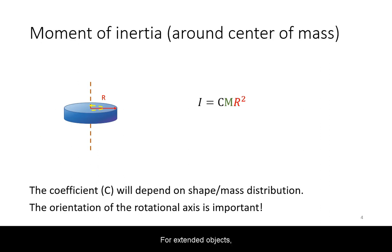For extended objects, the formula for moment of inertia will also be a combination of the mass times the dimension of the object squared multiplied by a coefficient that depends on the exact shape or mass distribution of the object.